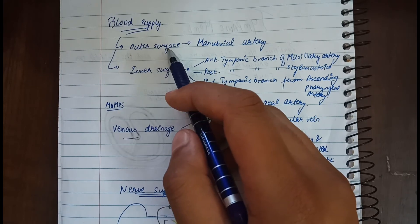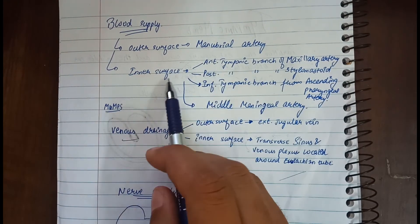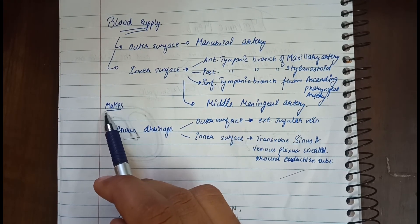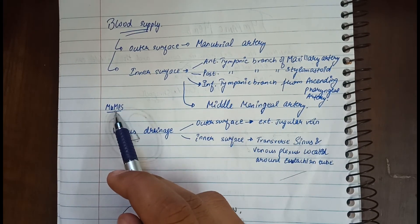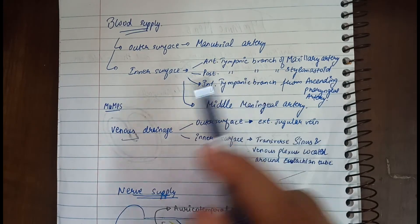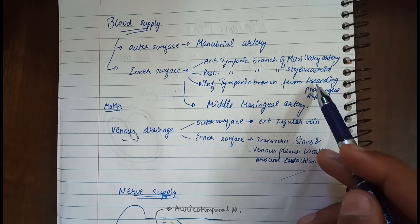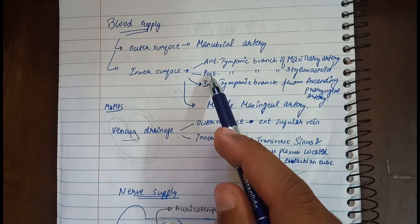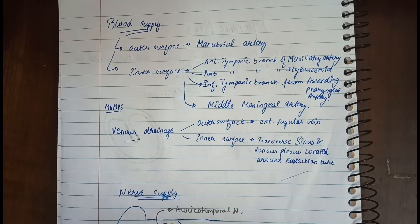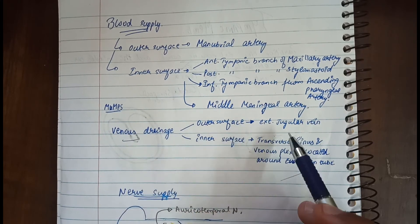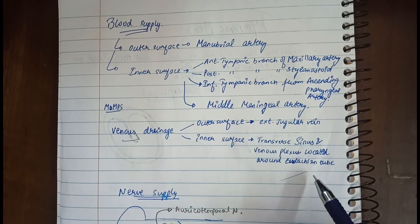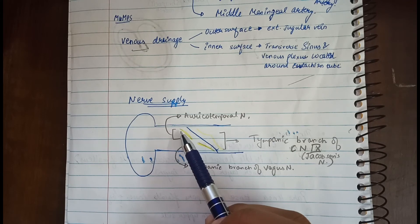Regarding blood supply, the outer surface is supplied by the manubrial artery, and the inner surface is supplied by different arteries remembered using the mnemonic MUMPS (with U silent): the first M is for the middle meningeal artery, the second M is for the maxillary artery giving the anterior tympanic branch, P is for the ascending pharyngeal artery giving the inferior tympanic branch, and S is for the stylomastoid artery giving the posterior tympanic branch. For venous drainage, the outer surface is drained by the external jugular vein, and the inner surface is drained by the transverse sinus and the venous plexus around the Eustachian tube.